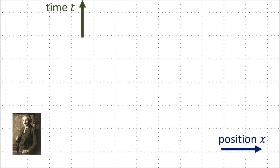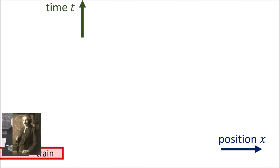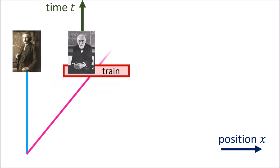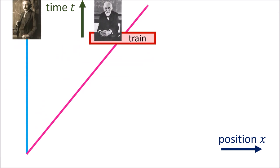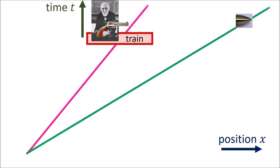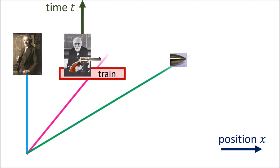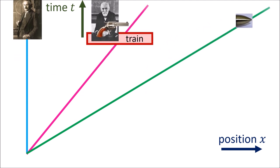Let's start with how velocity addition works in special relativity. Albert Einstein is standing still on the ground. A train is going by to the right at 90% the speed of light. Hendrik Lorentz is on board the train and fires a gun towards the right. The bullet travels out from the gun at 90% the speed of light relative to the train.